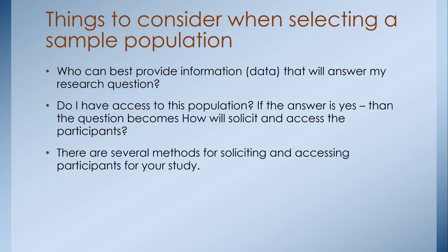The things we have to consider when selecting a sample population is who can best provide the data that will answer our research question. Do I have access to this population? If yes, then how will I solicit and access the participants? If you don't have access to the necessary population, you'll either have to change your research question or discover another way to access a population that can link you to the needed data.